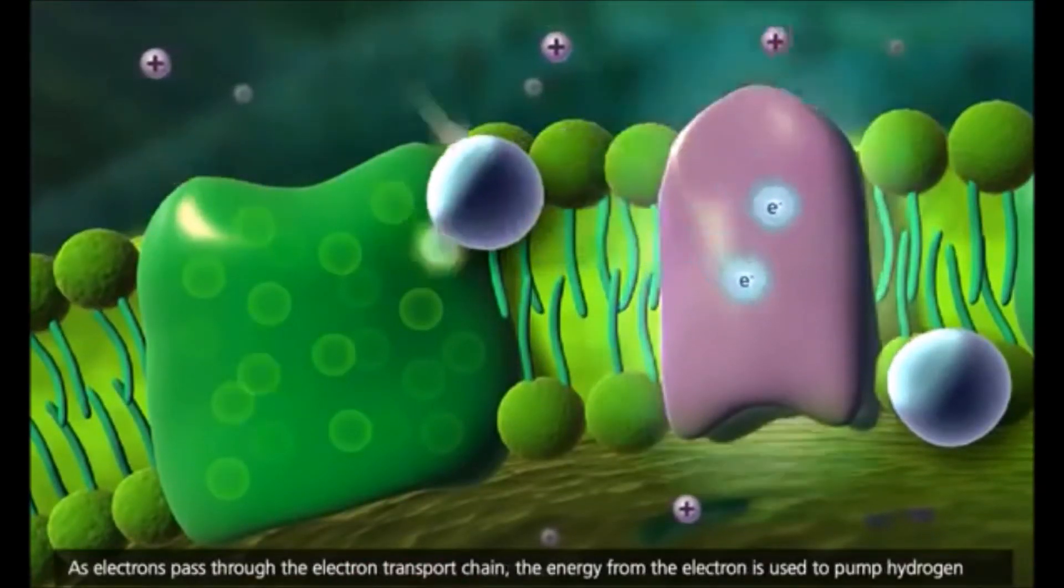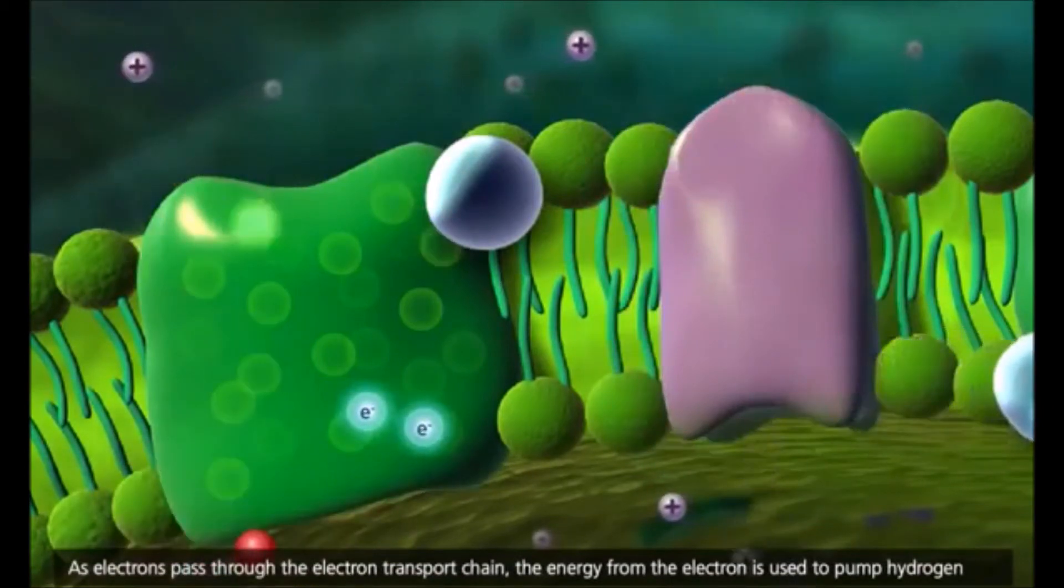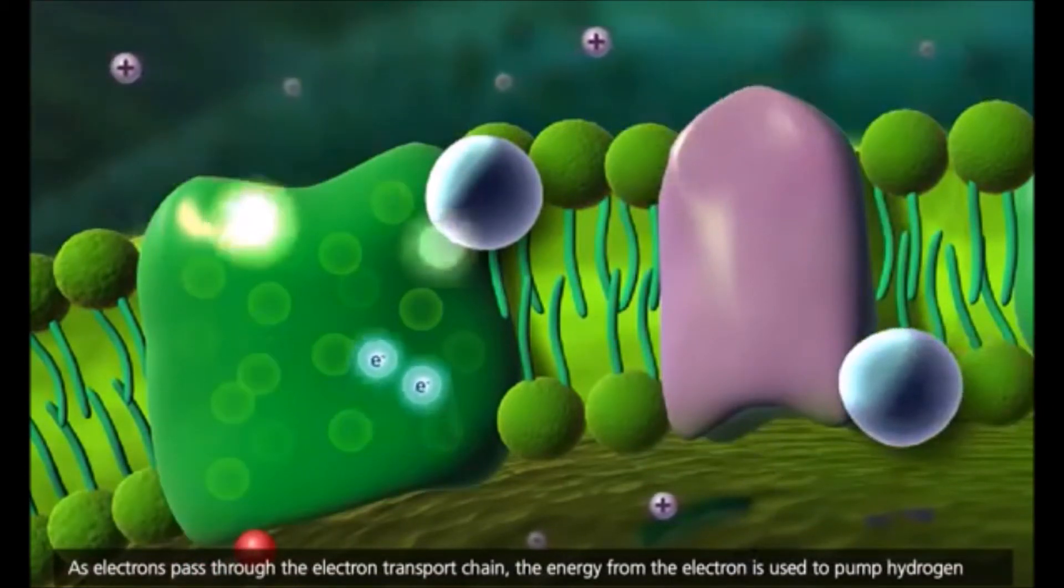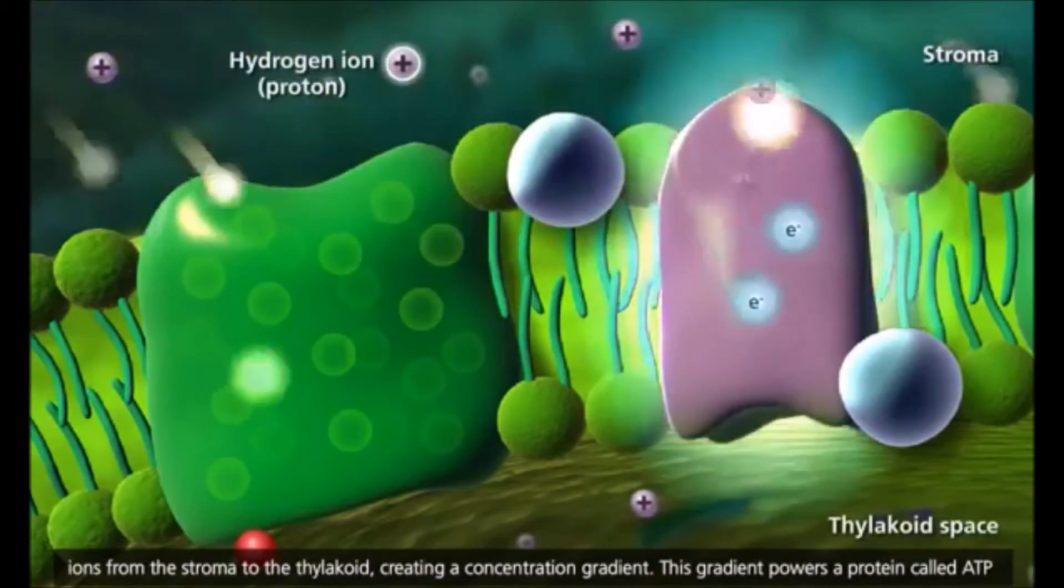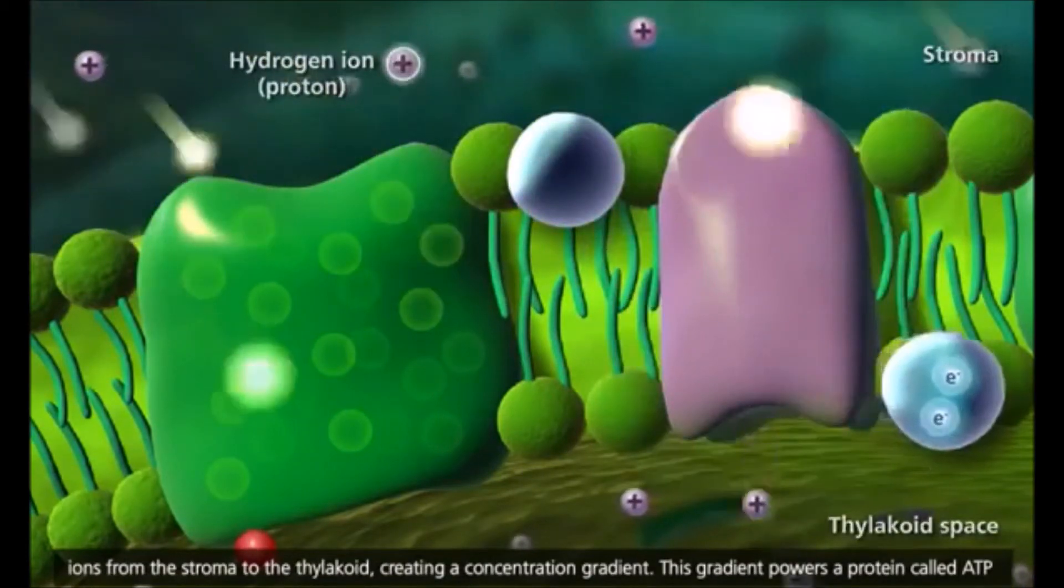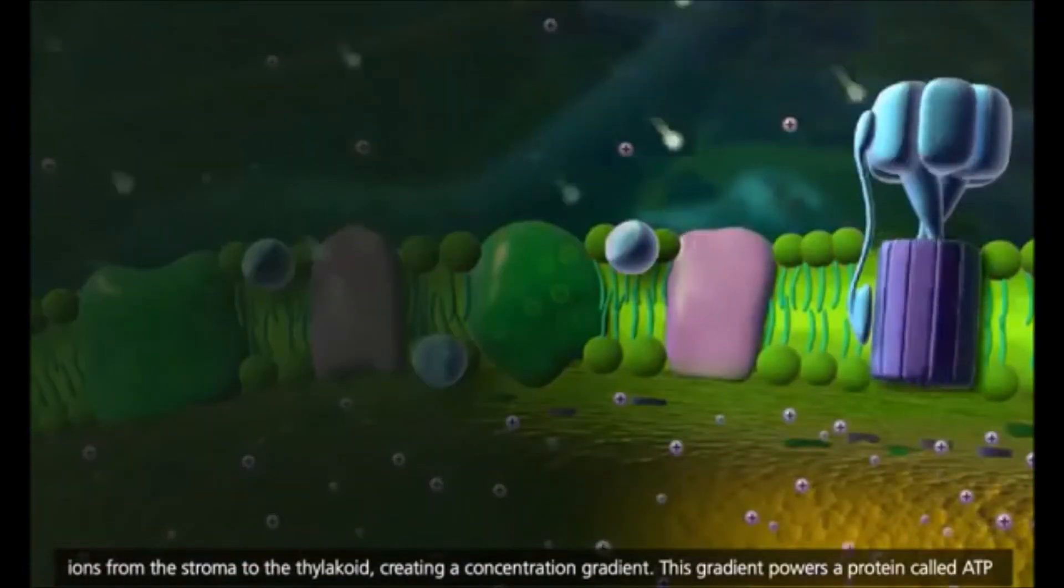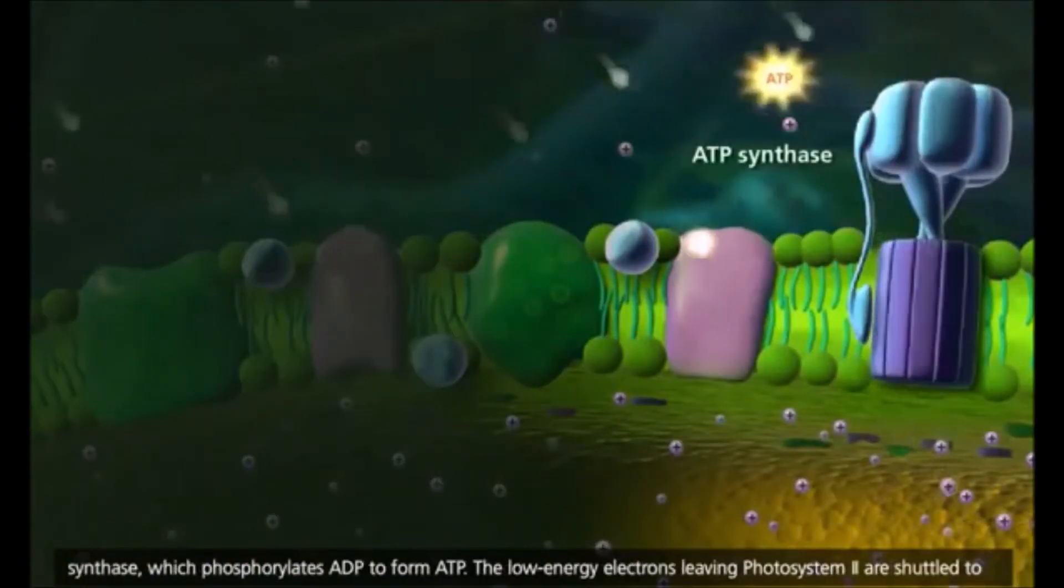As electrons pass through the electron transport chain, the energy from the electron is used to pump hydrogen ions from the stroma to the thylakoid, creating a concentration gradient. This gradient powers a protein called ATP synthase, which phosphorylates ADP to form ATP.